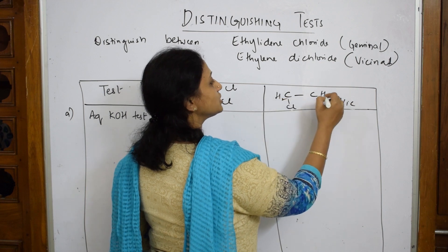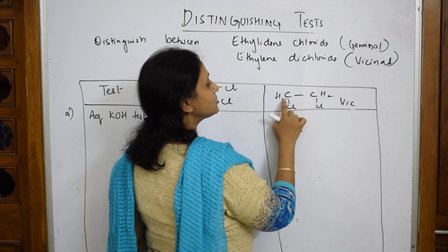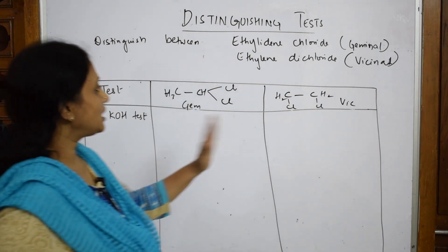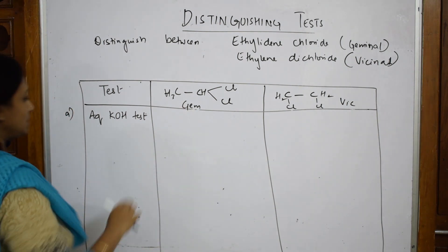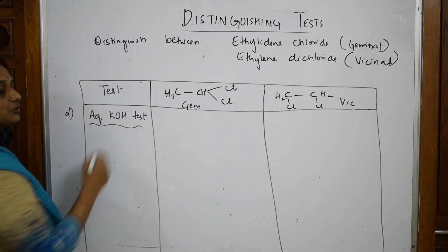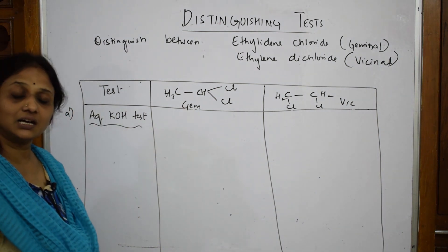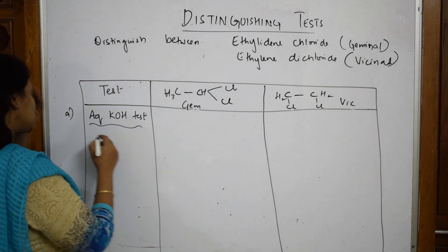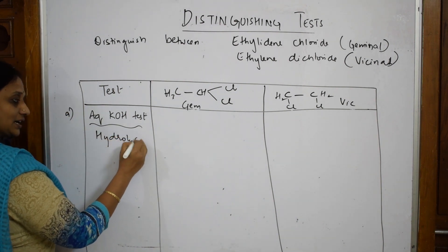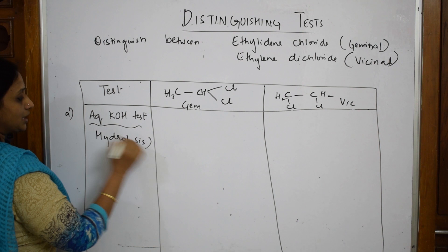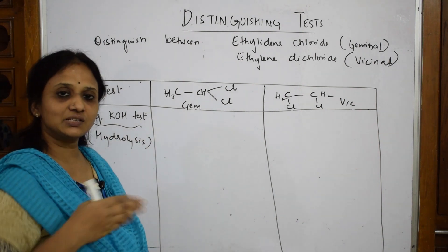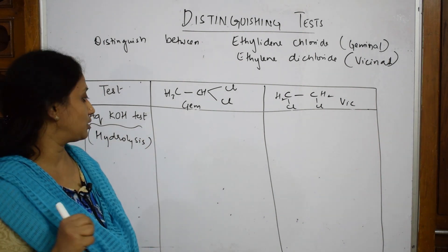So CH₂Cl–CH₂Cl — the valence of carbon should be 4. Now, the test we are going to perform is the aqueous KOH test, which is nothing but a hydrolysis reaction — removal of the water molecule.